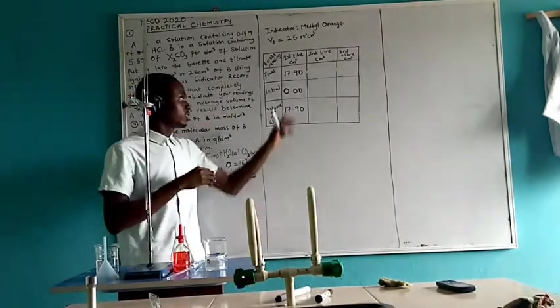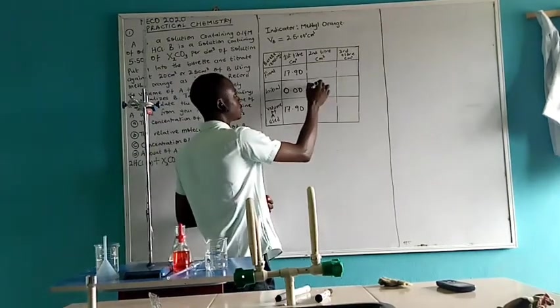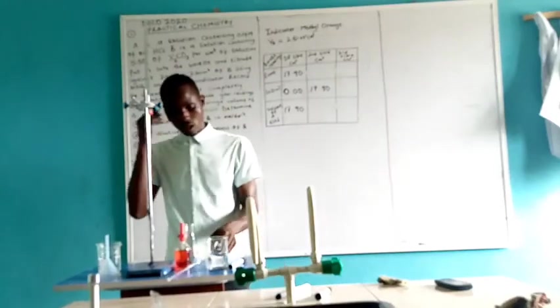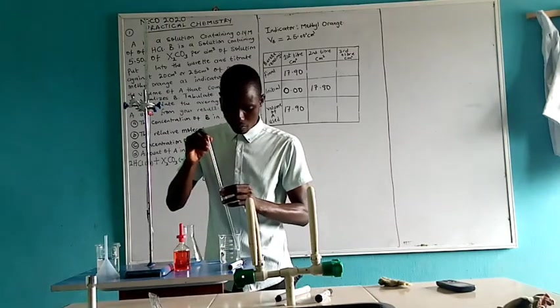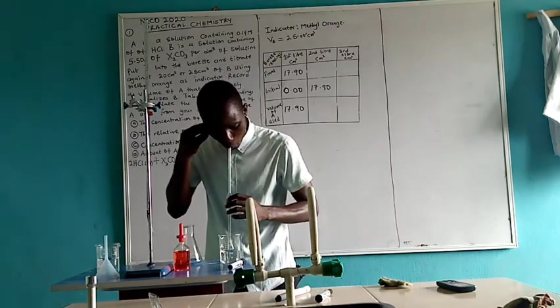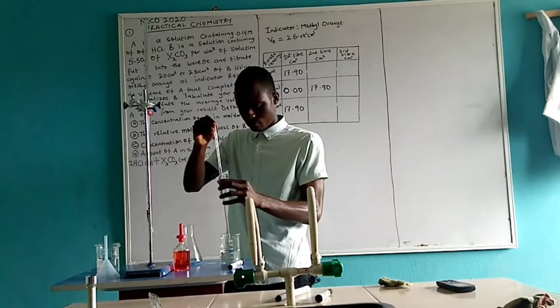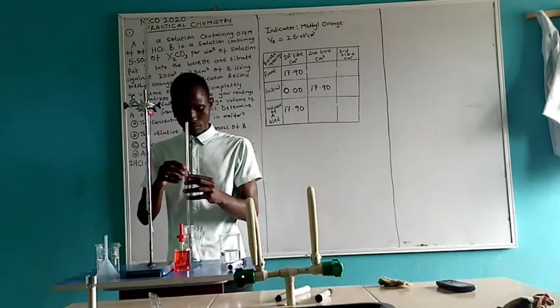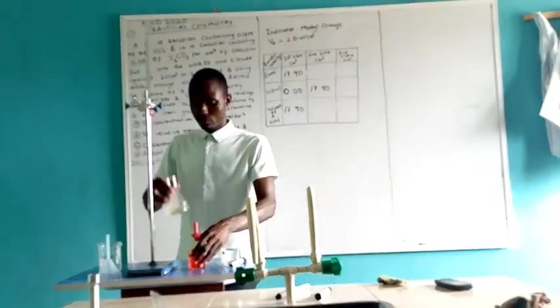I can continue my titration from the end because this value, I can still get more of it from this burette. 17.90 times 2 is still available in the burette. So I can start my initial from the second titration at 17.90. I have to draw another pipette of the base.